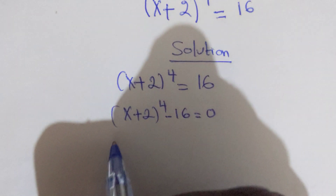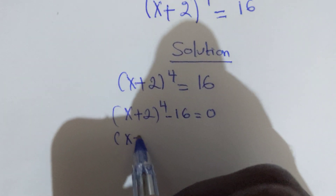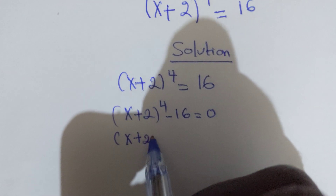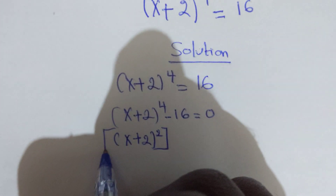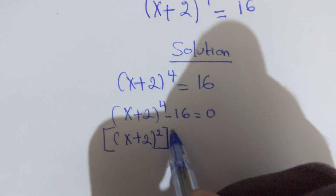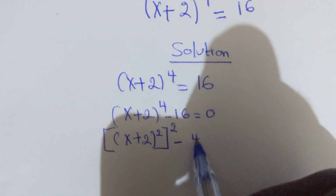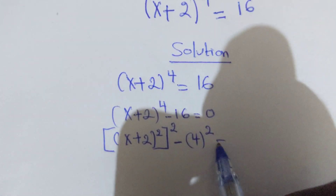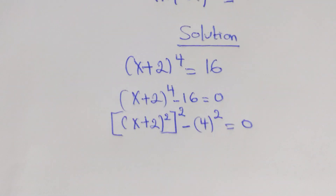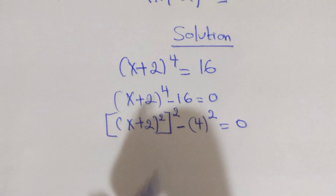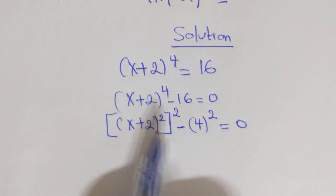This can be written as (x + 2)² raised to the power 2, then minus 4 squared, which equals zero. Now here we can expand this using the difference of squares approach.